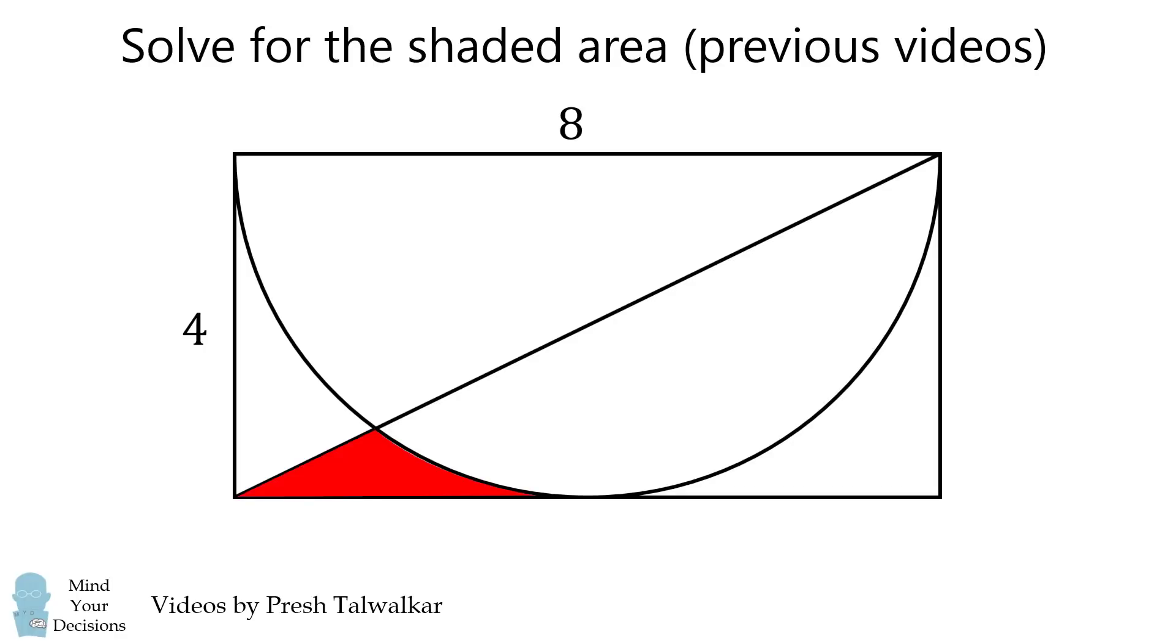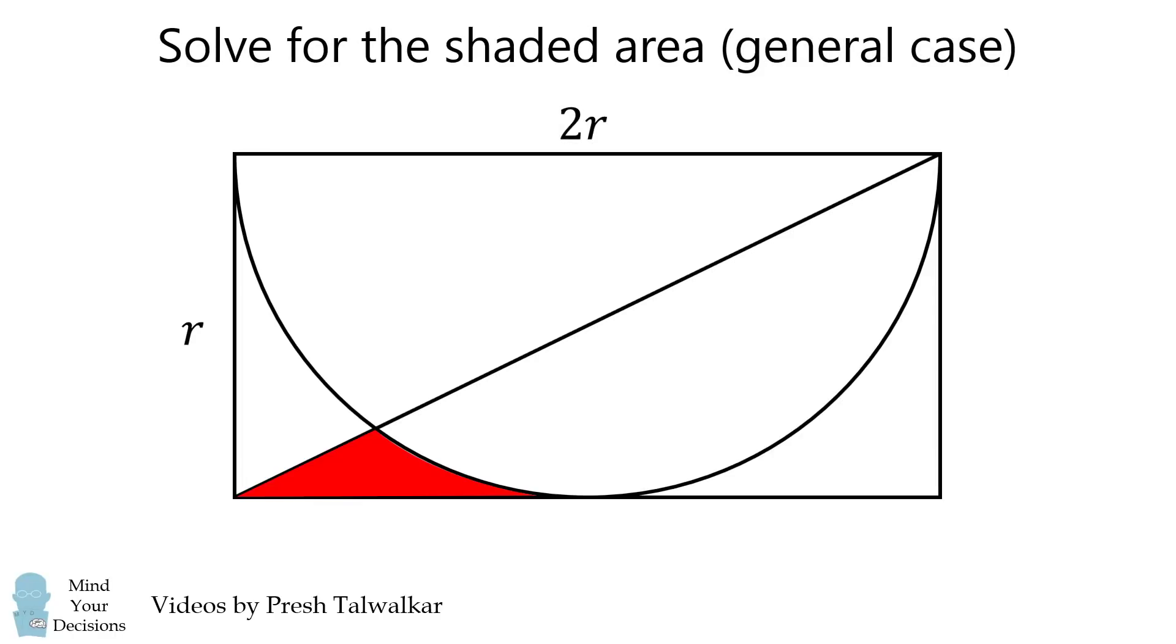I've solved for this in a previous video and in this video I'm going to ask for you to solve for a general formula in terms of R where the rectangle has side lengths R and 2R and R is the radius of the semicircle. I thank Tony Hasler for devising the solution method, which made me think of this general case.